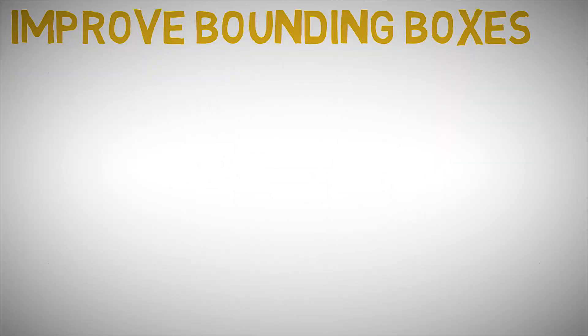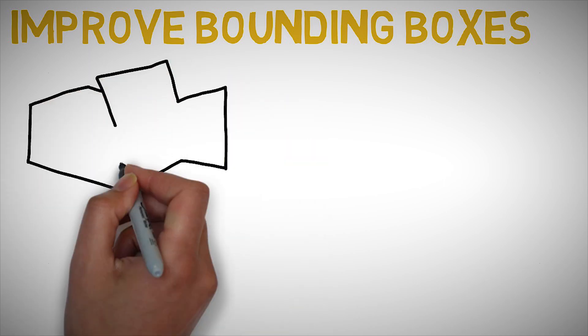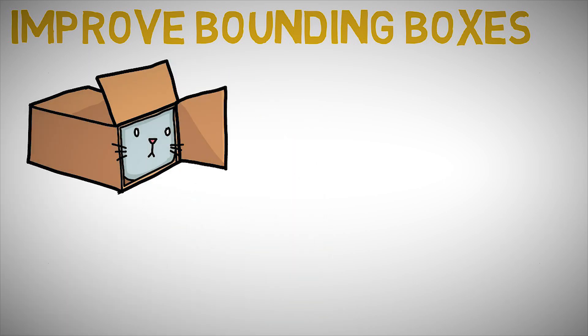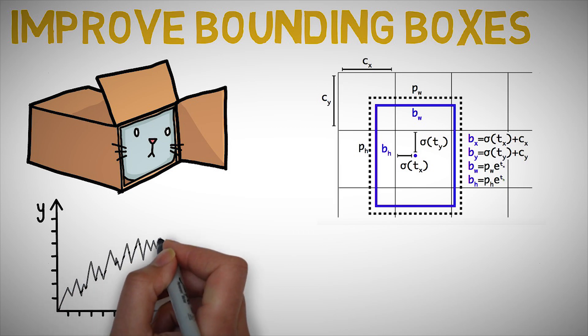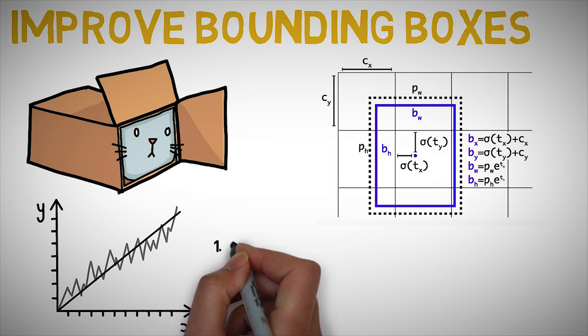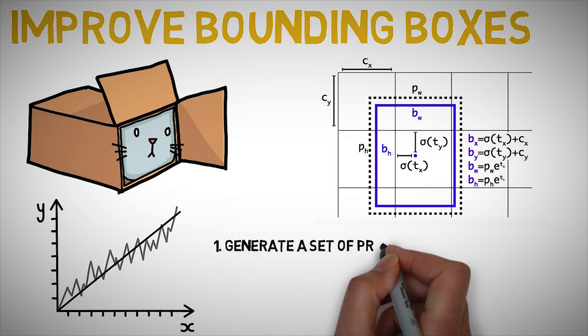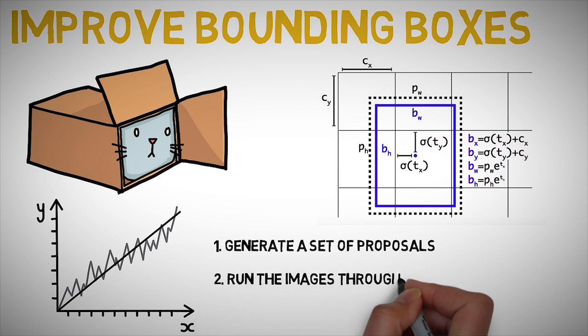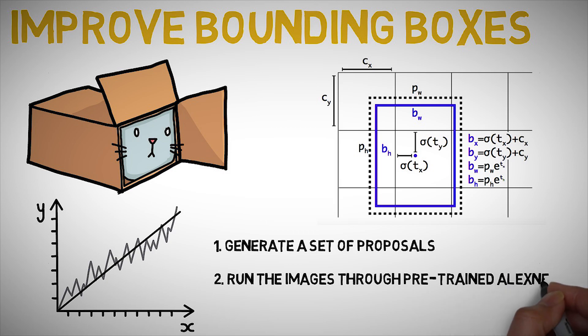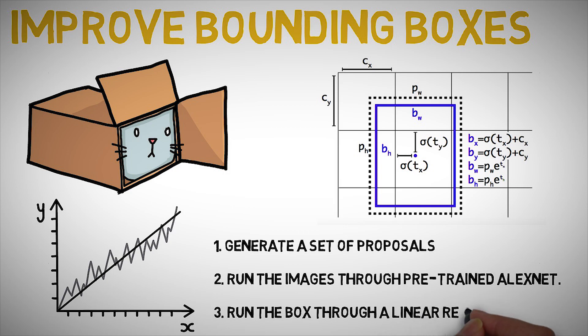How to improve the bounding boxes. Now, having found the object in the box, we can tighten the box to fit the true dimensions of the object. R-CNN runs a simple linear regression on the region proposals to generate tighter bounding box coordinates to get our final result. So to summarize, R-CNN is just the following steps: 1. Generate a set of proposals for bounding boxes. 2. Run the images in the bounding boxes through a pre-trained AlexNet and finally an SVM to see what object the image in the box is. And 3. Run the box through a linear regression model to output tighter coordinates for the box once the object has been classified. Simple right?